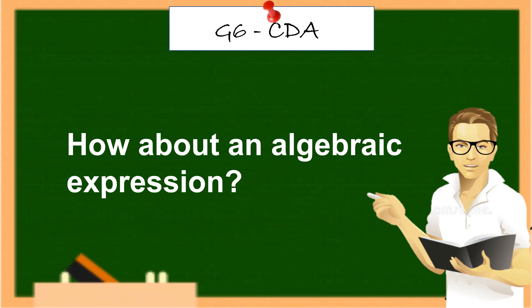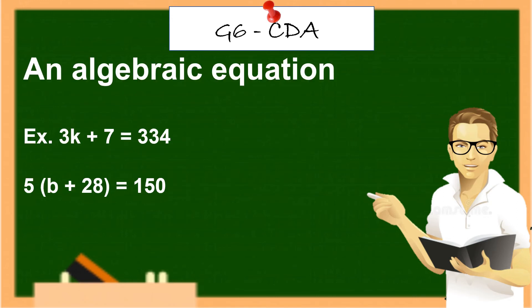How about an algebraic equation? An algebraic equation, example, 3k plus 7 is equals to 334. 5 times B plus 28 is equals to 150.